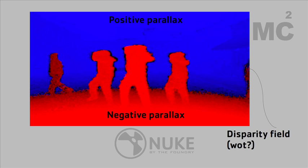Looking at this particular shot — if we were viewing this in stereo the way I've reconverged it — the characters in the foreground would be standing out in front of the screen, and the far background where the green screen is would be perceived as being behind the screen. Somewhere on the street in the middle would be perceived as being on the screen plane.